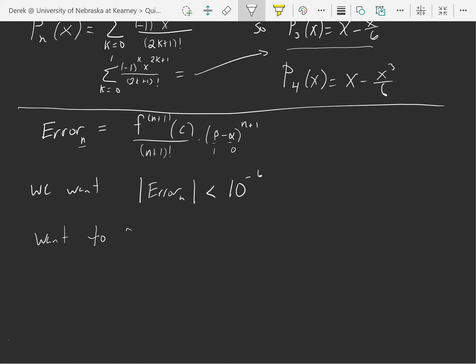Well, our alpha is 0, we're evaluating at beta equals 1, so we want to find n so that the n plus first derivative at c over n plus 1 factorial times 1 minus 0 to the n plus 1 is less than 10 to the negative 6th.